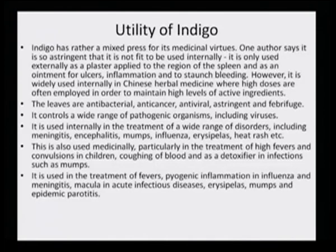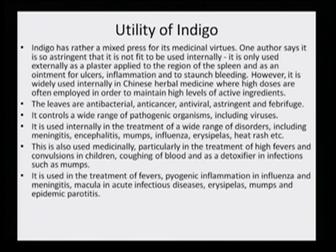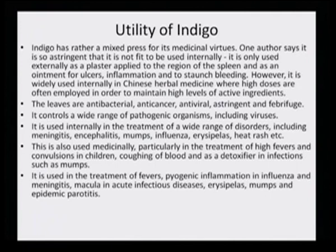Indigo has a rather mixed press for its medicinal virtues. One author says it is so astringent that it is not fit to be used internally — it is only used externally as a plaster applied to the region of the spleen and as an ointment for ulcers, inflammation and to staunch bleeding. However, it is widely used internally in Chinese herbal medicine therapy, where high doses are often employed to maintain high levels of active ingredients. Indigo was applied in both Ayurvedic and Chinese herbal medicine systems.